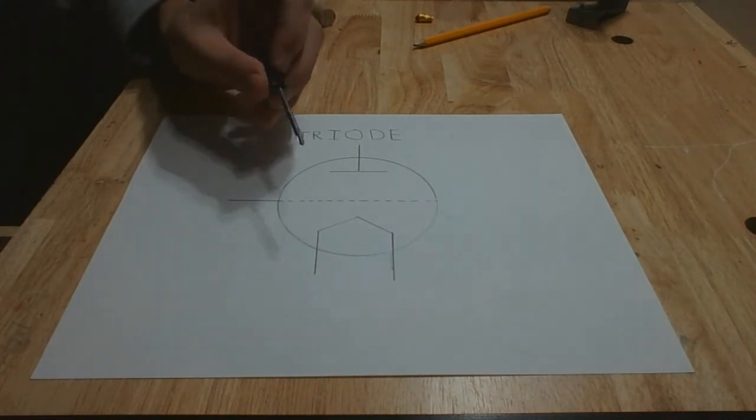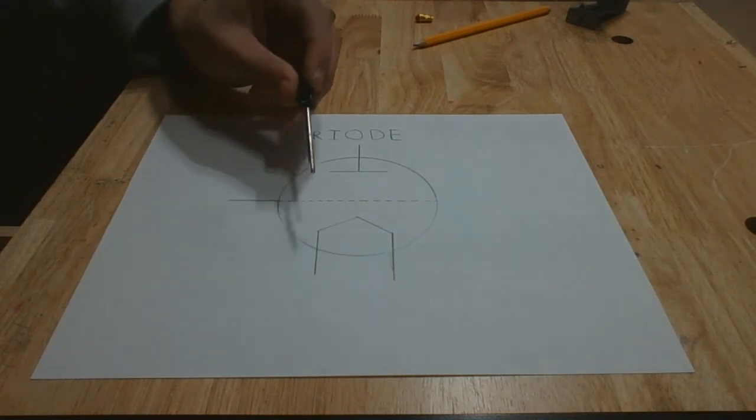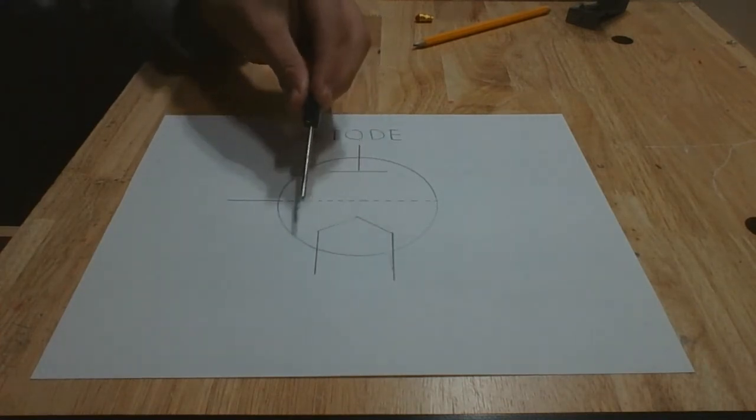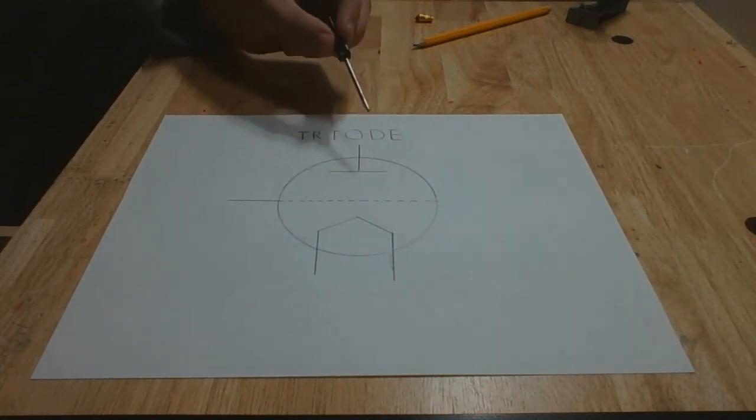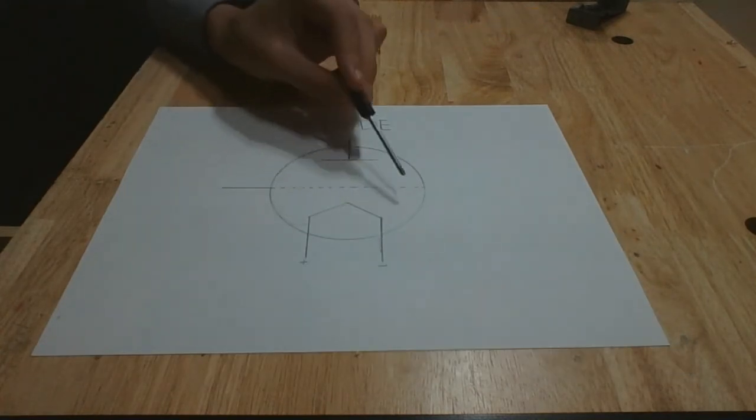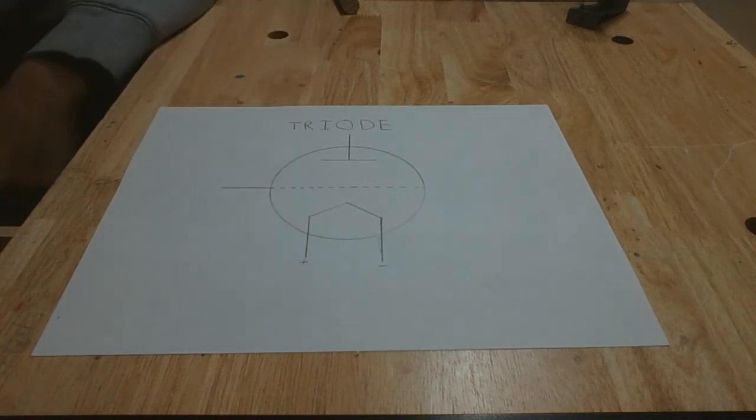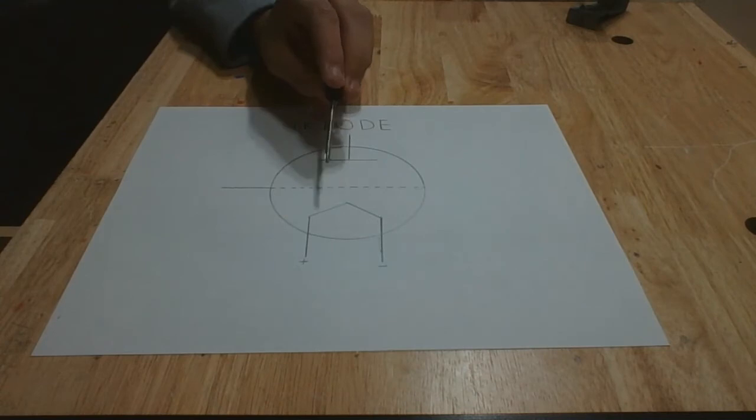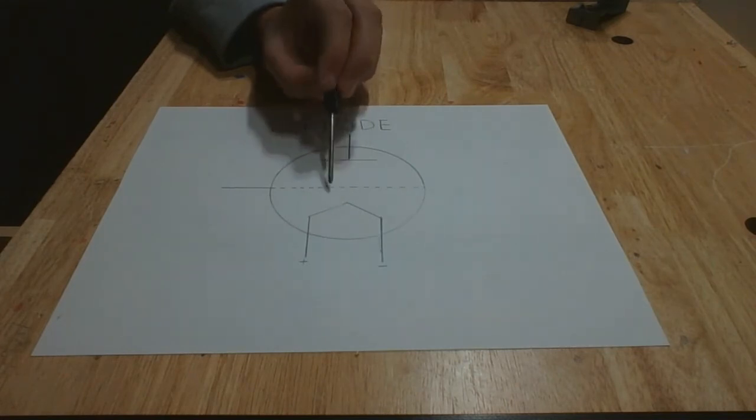The 811a is a triode meaning that it consists of three electrodes: a filament which is this V at the bottom, a grid which is this dotted line, and a plate or anode which is this upside down T at the top. When you pass a current through the filament or cathode, thermionic emission occurs. Thermionic emission is the liberation of electrons from an electrode by virtue of its temperature. It essentially is the releasing of energy supplied by heat. And since there is no air in the tube, these electrons can flow freely up to the plate or anode. Like this.